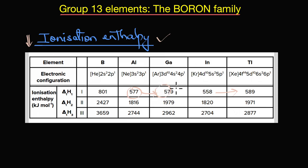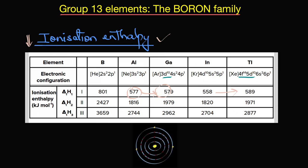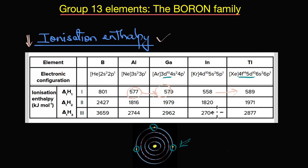This happens again due to the poor shielding effect of the intervening d and f orbitals. Because of the poor shielding, the outer electrons experience higher nuclear attraction — higher effective nuclear charge — meaning much more energy is needed to knock them off. This is why, in contrast to expectation, ionization enthalpy increases from aluminium to gallium and from indium to thallium.